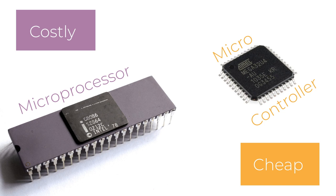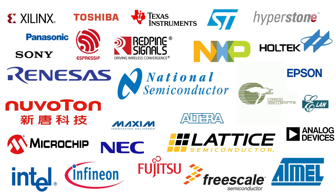A single microcontroller can cost more to fabricate than a microprocessor due to its die size and complexity, but the overall cost of a microcontroller is lower than a microprocessor setup with external chips. Various companies provide microcontroller chips, and they usually have their own architectures — like AVR from Atmel and PIC from Microchip. Some of the microcontroller companies are listed on the screen.